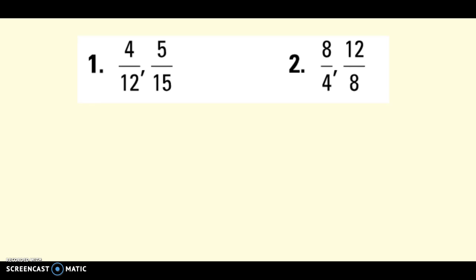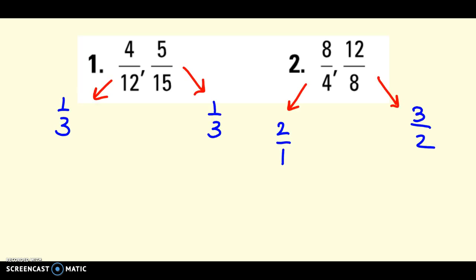Try these — simplify both of them and see if they simplify to the same thing. If they do, your answer is yes, they're proportional; if they don't, the answer is no. Number 1: I simplified them both and they both gave me 1 third — yes, those form a proportion. Number 2: I got two different things — no, these are not proportional, or they don't form a proportion.